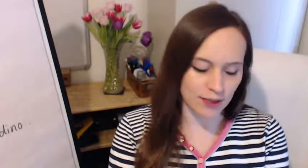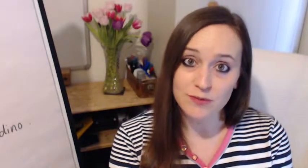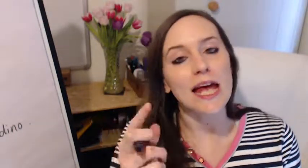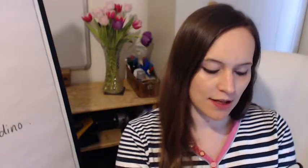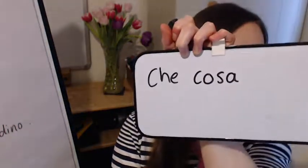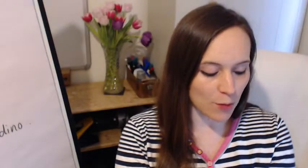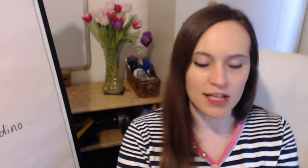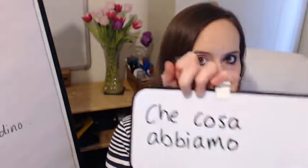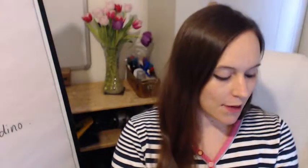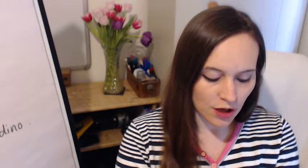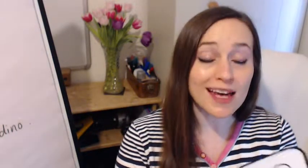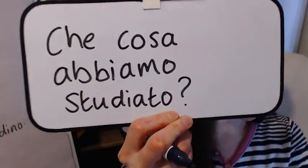You might understand that question, but I'm going to write it down so you can see how it's spelt and pronounced. So, che cosa? Lots of what questions start with this. Che cosa abbiamo? That's 'we have' in the present tense. And then studiato — that's the past participle of the verb studiare.